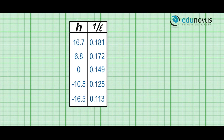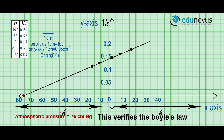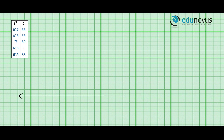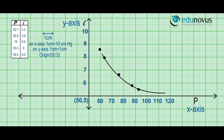Now, we plot H versus 1 by L graph, considering H on the x-axis and 1 by L on the y-axis. The scale on x-axis is 1 centimeter equal to 10 centimeters and scale on y-axis is 1 centimeter equal to 0.05 per centimeter. The negative intercept of the x-axis gives the atmospheric pressure, which is 76 centimeters of mercury. We also draw a P versus L graph with P on the x-axis and L on the y-axis. The scale on x-axis is 1 centimeter equal to 10 centimeters of mercury and on y-axis 1 centimeter equal to 1 centimeter. The graph comes out to be a rectangular hyperbola. This proves that P is inversely proportional to L. Hence, Boyle's law is verified.